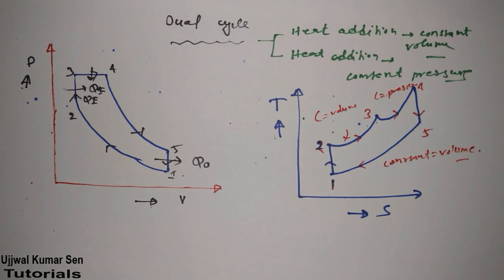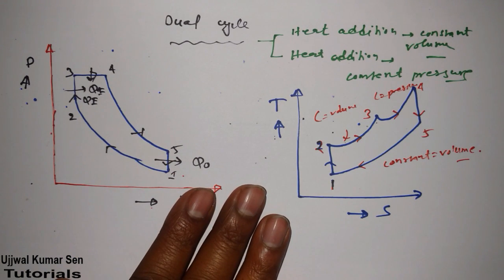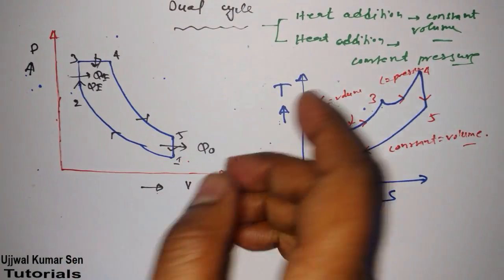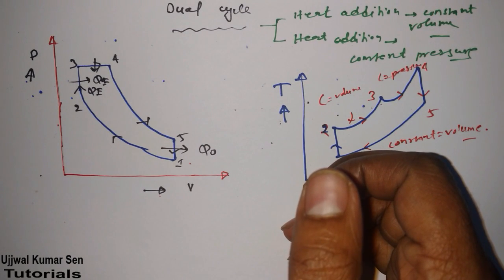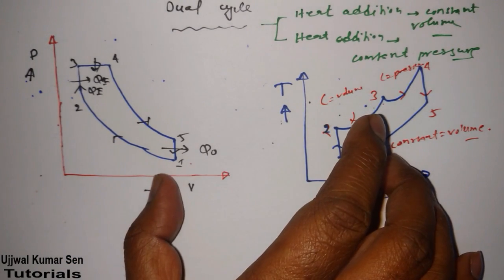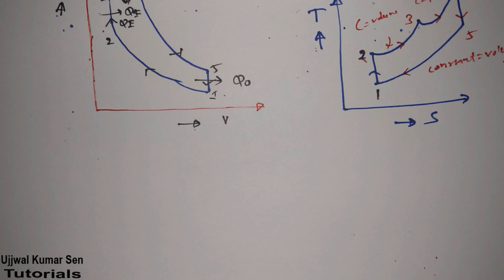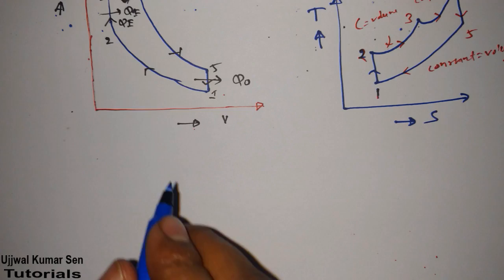If you are studying this, you are likely preparing for a university examination and need to write answers to score marks. So draw both diagrams — the PV and TS diagrams — and note that in the dual cycle we add heat twice: once at constant volume and once at constant pressure.